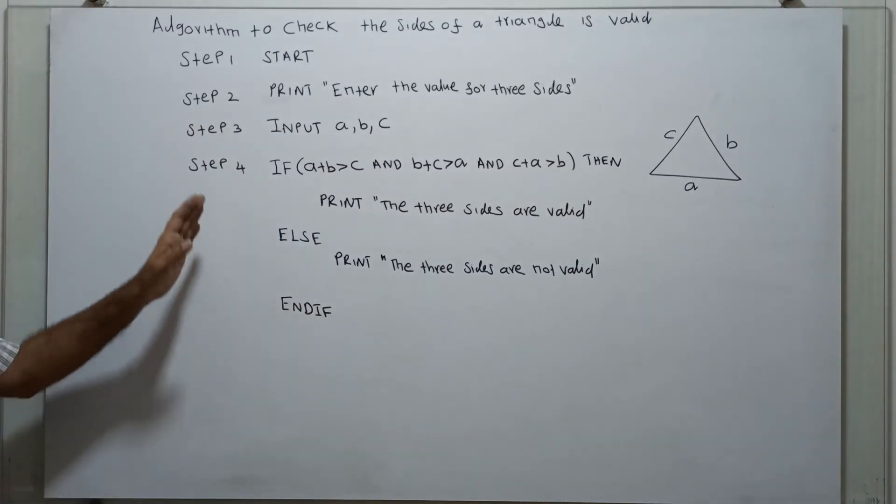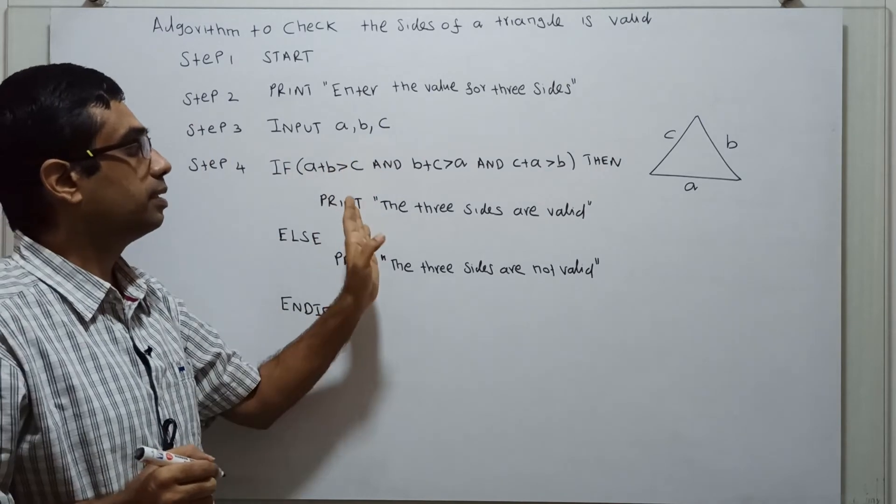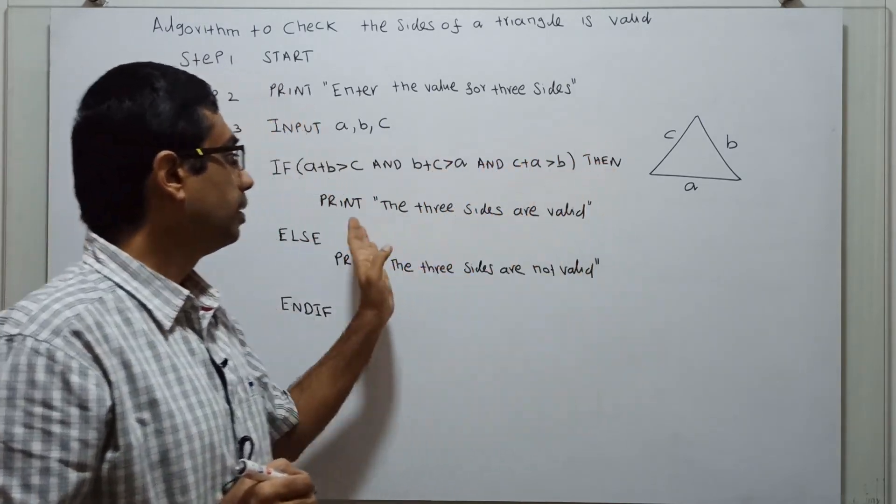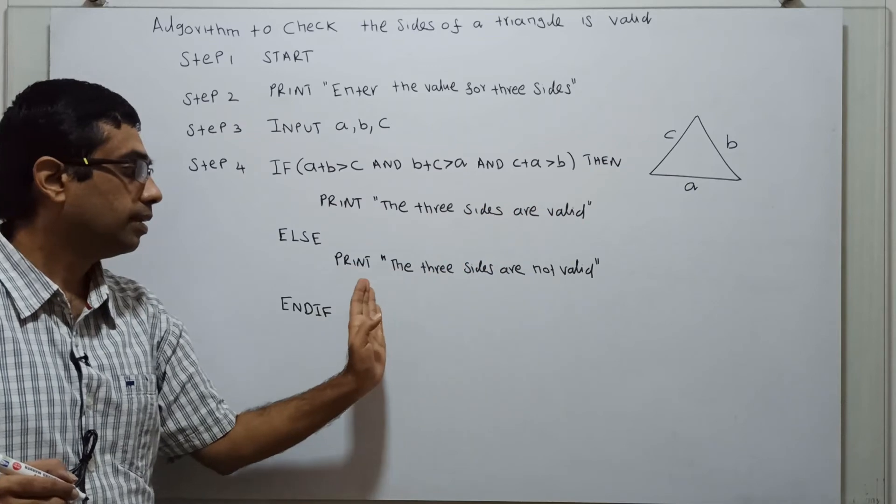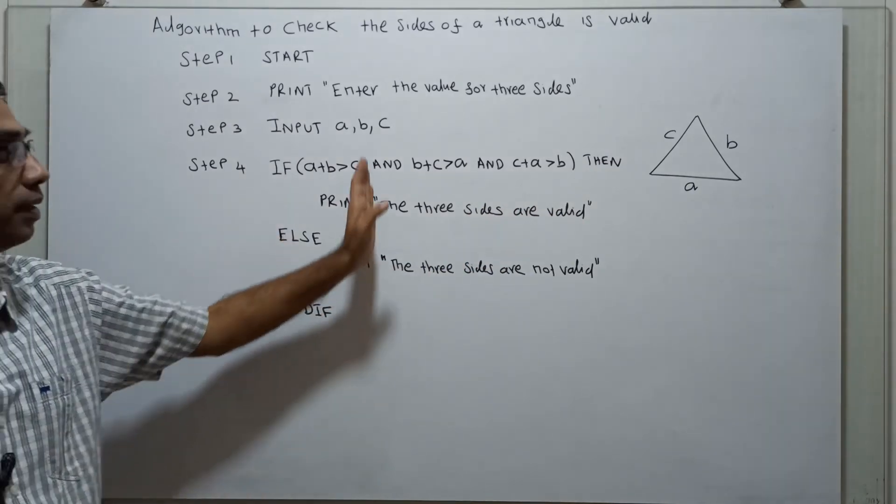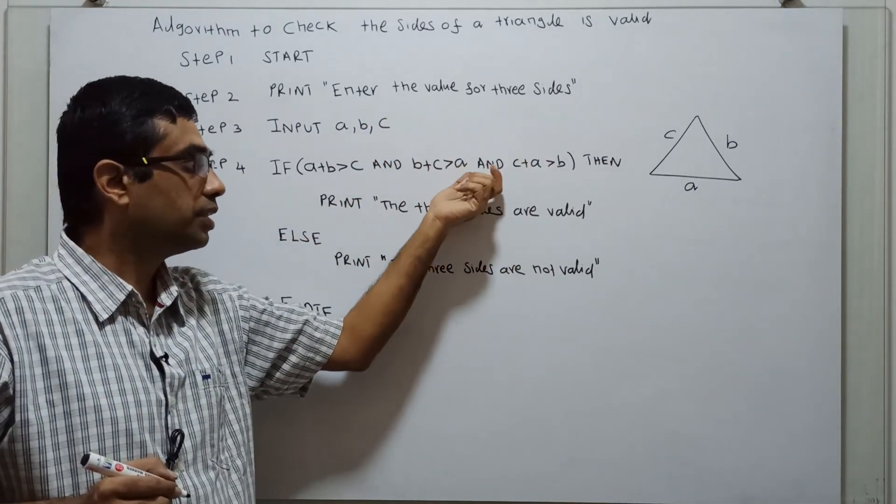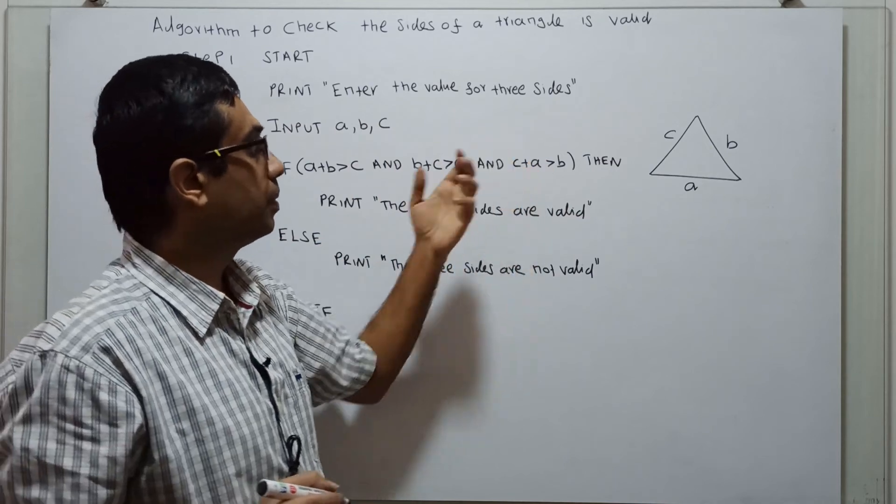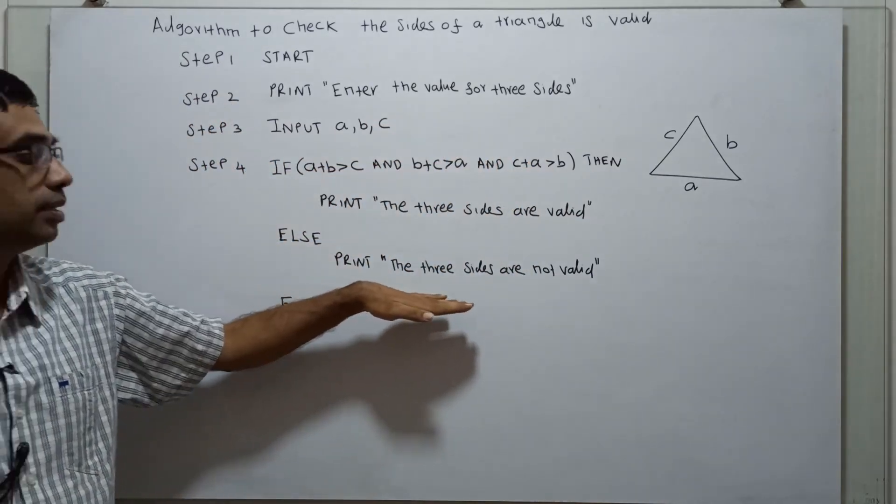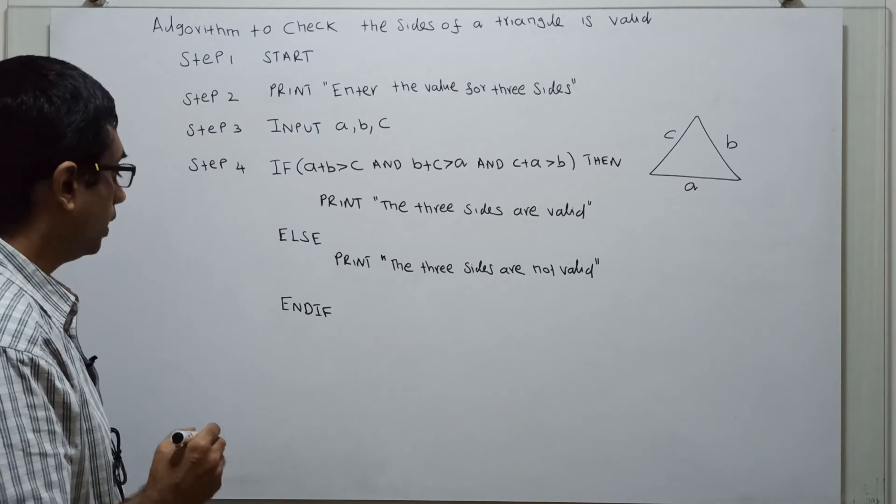So that's it. With all the three sides A plus B greater than C, B plus C greater than A, C plus A greater than B, then we are printing the three sides are valid. Otherwise, if any one of the condition is false, we come to the else part. We will print the three sides are not valid.